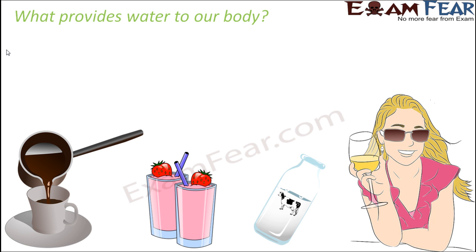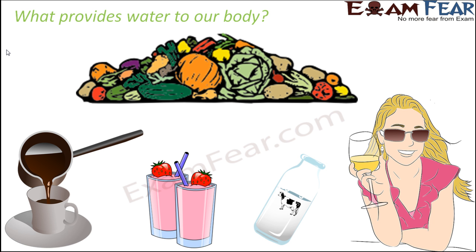How does our body get water? One way is we directly drink water. Besides that, there are a lot of food items — for example, milk, tea, coffee, milkshakes, juices, and buttermilk — which also contain a huge amount of water. In fact, all fruits and vegetables also contain some water. For example, if you take a potato and cut a slice, you can feel that the slice is wet — that is due to the presence of water. So when we consume any of these, we are taking in water. It is important that we provide sufficient water to our body so that it can function properly.